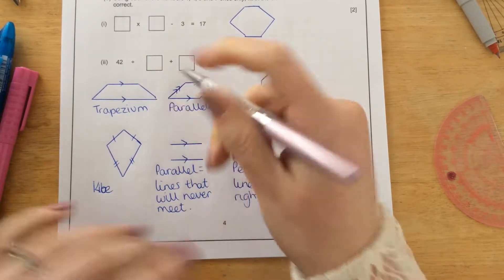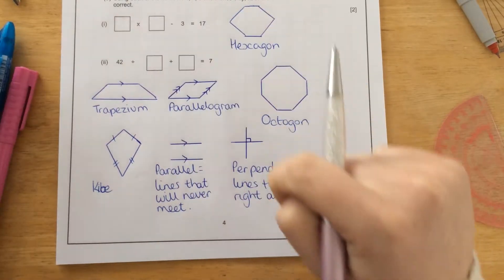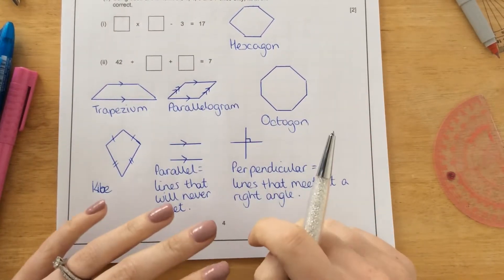These two lines are not parallel because if I kept drawing them, if I extended them, then they would end up crossing over. So that means they are not parallel.